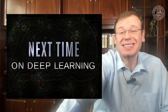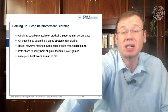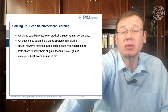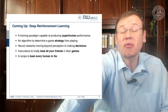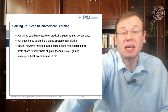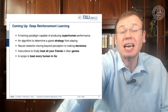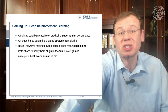Next time in deep learning, coming up is deep reinforcement learning — a really cool technique. We will have a couple of videos showing you this paradigm of producing superhuman performance for playing certain games. The strategy is to train agents that can solve specific tasks in a specific environment, using an algorithm to determine a game strategy from playing the game itself. Neural networks are moving beyond perception to really making decisions. You will get instructions on how to beat all your friends in Atari games, and we'll show you a recipe to beat every human in Go. So stay tuned and watch the next couple of videos.